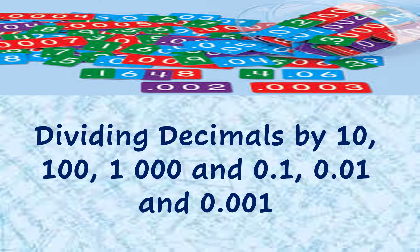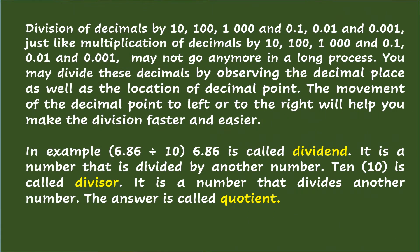Dividing decimals by ten, one hundred, one thousand, and one-tenth, one-hundredth, and one-thousandth — just like multiplication of decimals, may not require a long process. You may divide these decimals by observing the decimal place as well as the location of the decimal point. The movement of the decimal point to the left or to the right will help you make the division faster and easier.